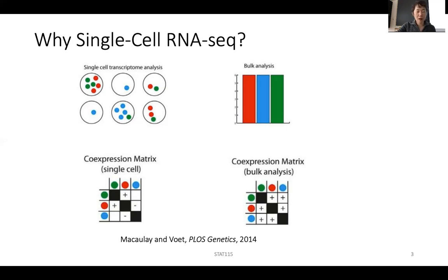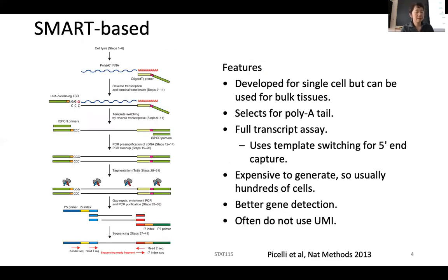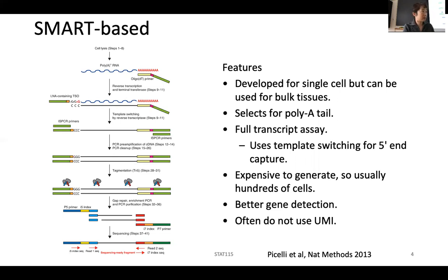Single cell RNA-seq offers a lot of new insights. In terms of single cell profiling technologies, in the early days people used SmartSeq — it's still being used. You can also use it for bulk tissue. In SmartSeq, you titrate down the initial cell population to a single cell per well, and then you carry out the reaction in that well. If you have a small amount of material, SmartSeq can be used.